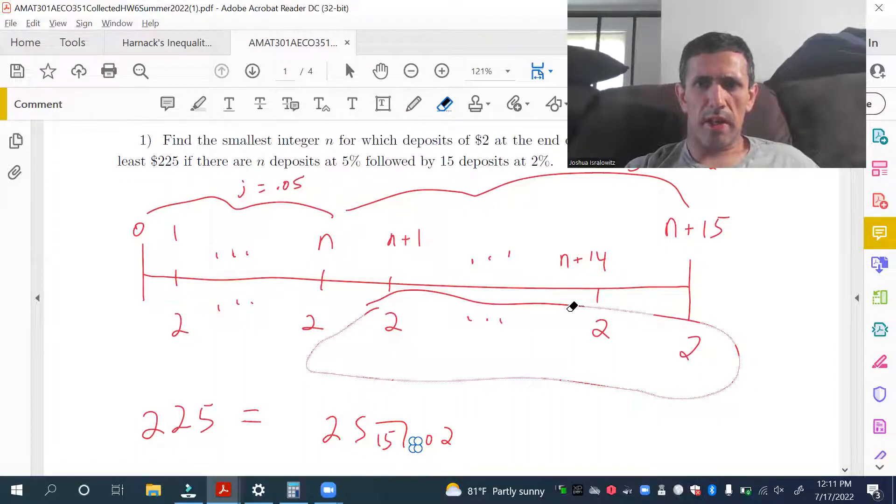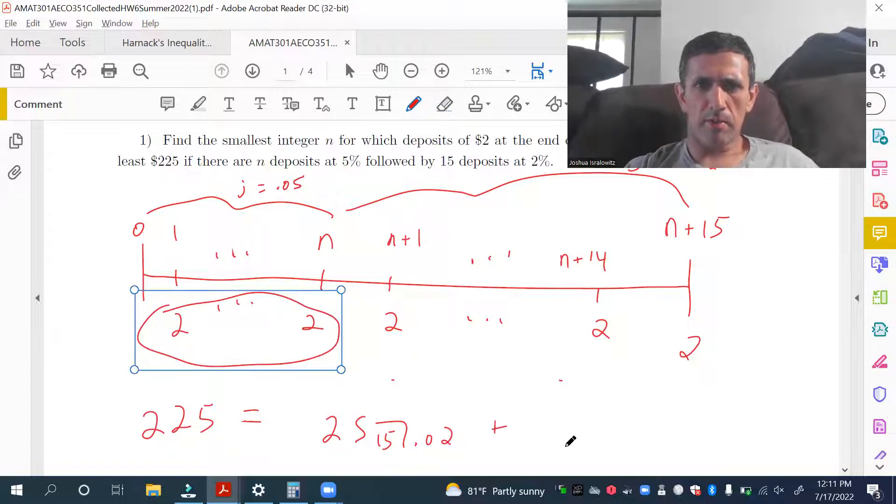So, now let's look at the first N periods and payments, rather. So, we're going to accumulate those at T equals N. So, we look at these N payments here. So, it's 2SN.05, that accumulates at N here, but then it sits in the account for 15 more periods, an interest rate of 2%. So, this times 1.02 to the 15th.